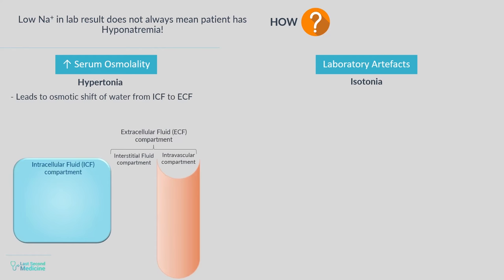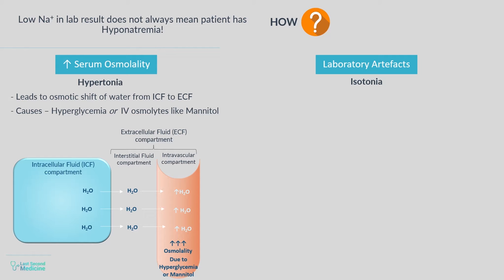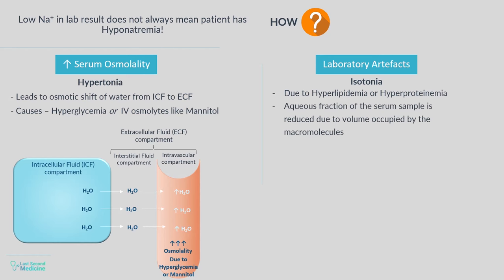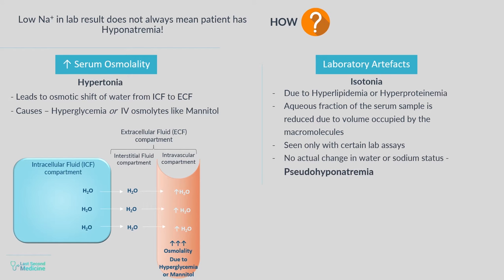Increased serum osmolality, or hypertonicity, causes an osmotic shift of water from interstitial and intracellular space to intravascular space, leading to a relative increase in water to sodium. This situation may be seen in severe hyperglycemia or with the use of an osmotically active substance such as mannitol. Artifactual causes of hyponatremia include severe hyperlipidemia or hyperproteinemia, where the aqueous fraction of the serum sample is reduced because of the volume occupied by the macromolecules. Since there is no actual change in water or sodium status in this situation, this type of hyponatremia is called pseudohyponatremia, and serum osmolality will be normal or isotonic.